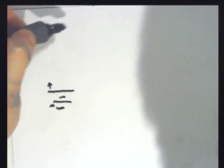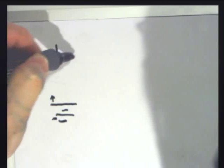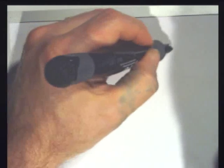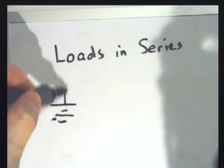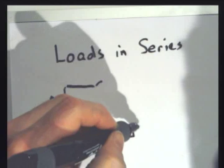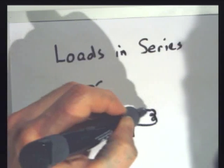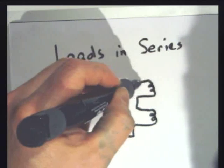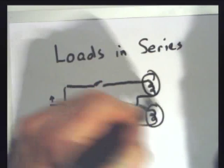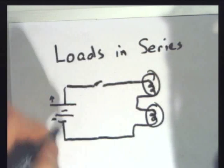I'll just start off with one battery. So here's my battery. And I'll call this loads in series. By that, I mean the electrons that leave this cathode, they're going to have to run through both light bulbs to get to the anode. Bummer.